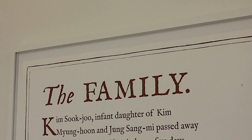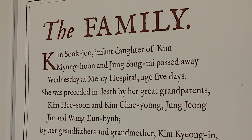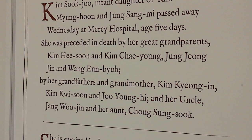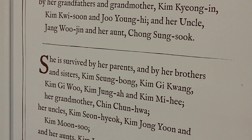Kim Suk-ju, infant daughter of Kim Myung-hun and Jung Sang-mi, passed away Wednesday at Mercy Hospital, aged five days. She was preceded in death by her great-grandparents Kim Hee-sun and Kim Chaeyoung, Jung Jung-jin and Wang Eun-byo, by her grandfathers and grandmother Kim Kyung-in, Kim Kui-sun and Ju Young-hee, and her uncle Jang Woo-jin, and her aunt Sung Sung-suk. She is survived by her parents and by her brothers and sisters Kim Sung-bong, Kim Ki-kwang, Kim Ki-woo, Kim Jung-a, and Kim Mi-hee, and her grandmother Chin Jeon-hwa.